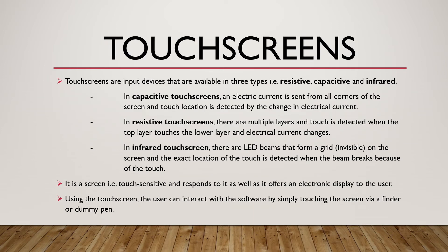Touch screen. Touch screens are input devices available in three types: resistive, capacitive, and infrared. In a capacitive touch screen, an electric current is set from all corners of the screen and the touch location is detected by the change in electrical current. In a resistive touch screen, there are multiple layers and touch is detected when the top layer touches a lower layer and the electrical current changes. In an infrared touch screen, there are LED beams in the form of an invisible grid on the screen, and the exact location of the touch is detected when the beam is broken.